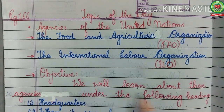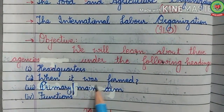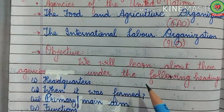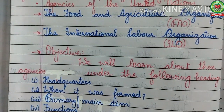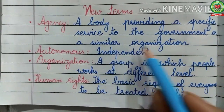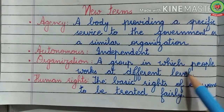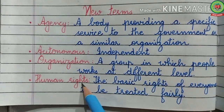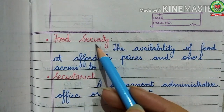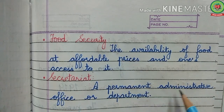The main objective of today's topic is to learn about these agencies under the following headings: headquarters, when it was formed, primary aim of the agency, and the functions of the agencies. Before discussing these points, let us look at new terms: 'agency' means a body providing a specific service to the government or similar organization; 'autonomous' means independent; 'organization' means a group in which people work at different levels; 'human rights' means the basic rights of everyone to be treated fairly.